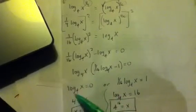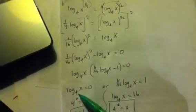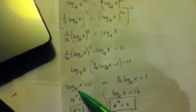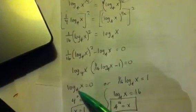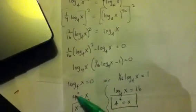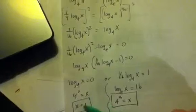Well, when I set this log base four of x equal to zero, I can use the exponential form. So four to the zero equals x. Well, four to the zero is one, so x is one.